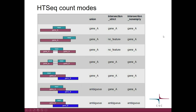Let's look at the HT-seq count modes. The default mode is the union mode. It doesn't make much difference in many situations which mode you use — for example, when the situation is clear, all three modes would count the read to gene A. But when a read overhangs the gene or maps to an intron, the strict mode would not count it for that gene. And when a read maps totally within gene A but partially to gene B, the default union mode would not count it for either gene.